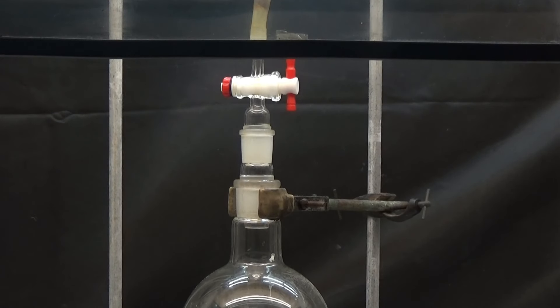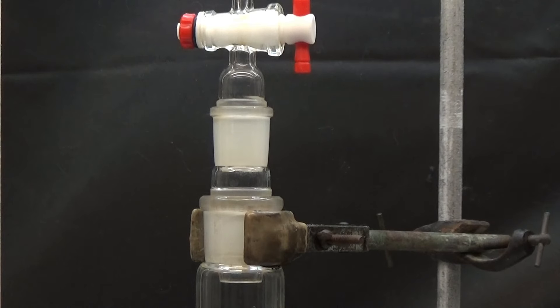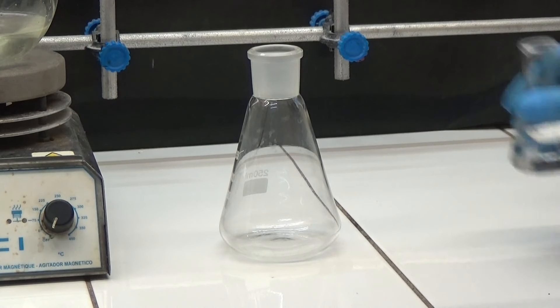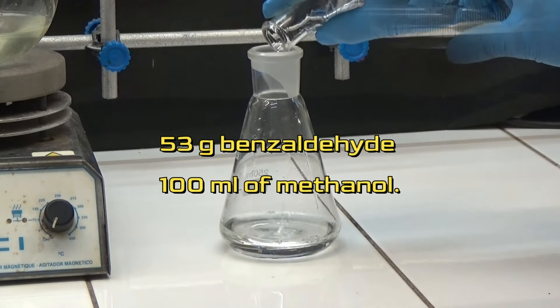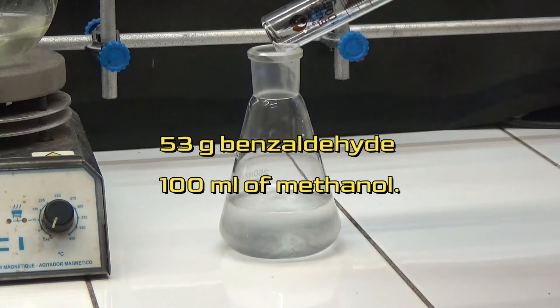At the outlet of the flask, we have adapted a direct outlet tube for fume extraction. In a 250 milliliters Erlenmeyer flask, we prepare a solution of 53 grams of benzaldehyde and 100 milliliters of methanol.